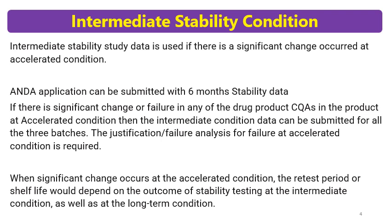For abbreviated drug applications such as ANDA for the US market, the application can be submitted with 6-month stability data, which involves accelerated, intermediate, and long-term stability data. If the product shows significant change or failure in any drug product quality attributes or CQAs, then intermediate conditions can be used. In simple terms, if there is a significant change at accelerated condition, intermediate condition data is submitted.